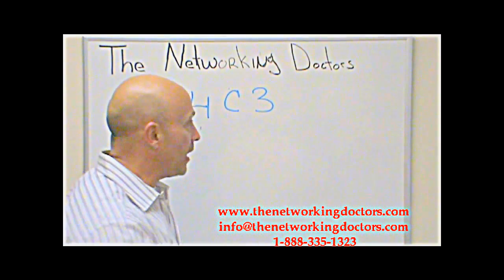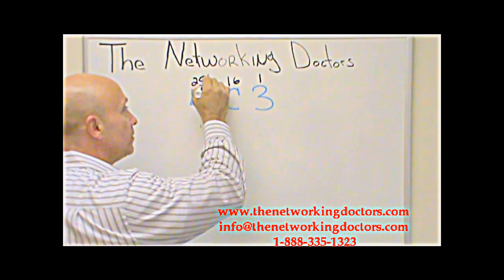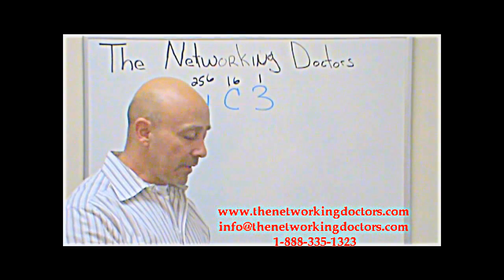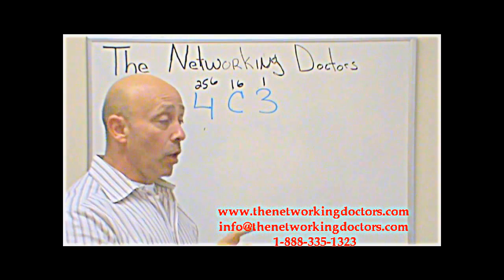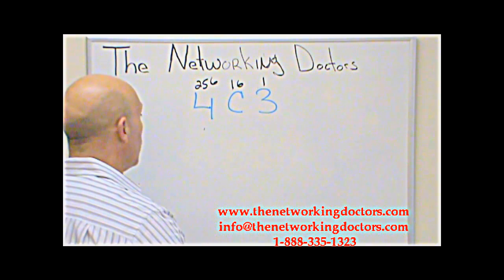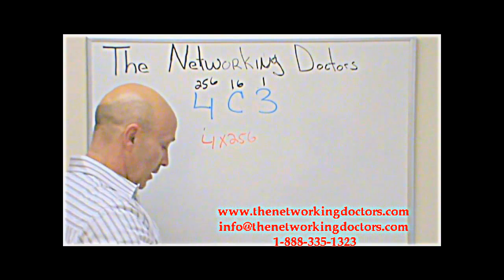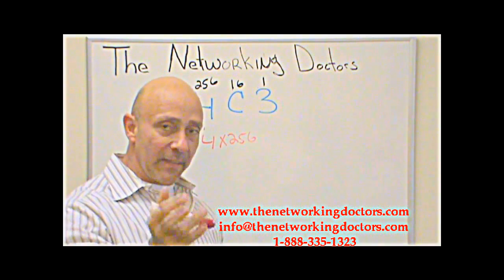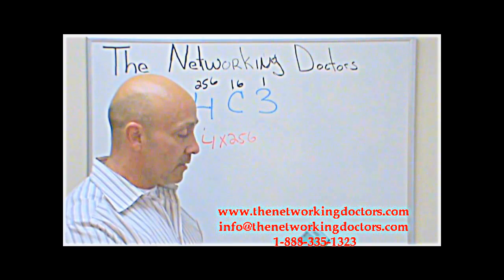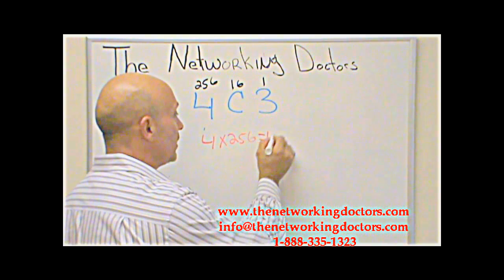We all know hex is base 16, so the place values are 1, 16, 256. This other video picked up a calculator and said, okay, we're going to multiply 4 times 256. And can you imagine doing this inside the Prometric center? They'll kick you out. 4 times 256 — it's 1024.